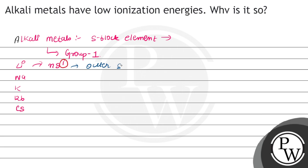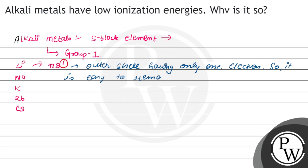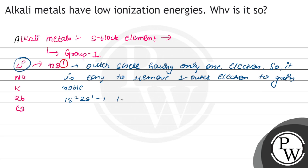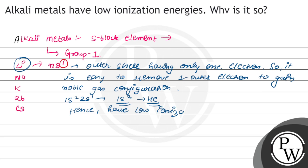Since the outer shell has only one electron, it is easy to remove that one outer electron to gain noble gas configuration. For example, lithium is 1s2, 2s1. If this one electron is removed, it becomes 1s2, which is helium — noble gas configuration. That's why, by removing only one electron, you get noble gas configuration, so it is easier. Hence, alkali metals have low ionization energy.